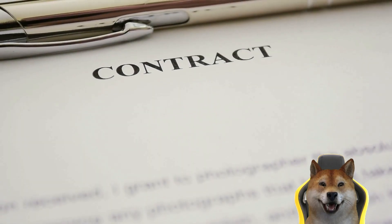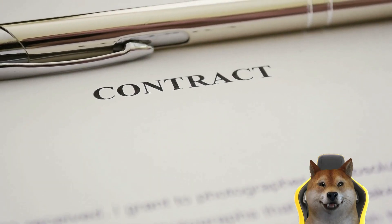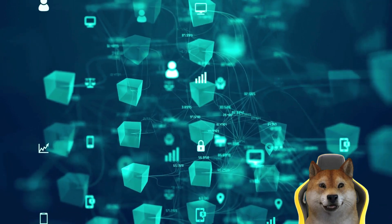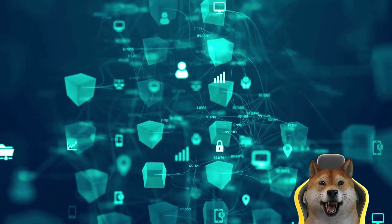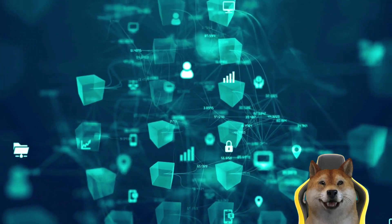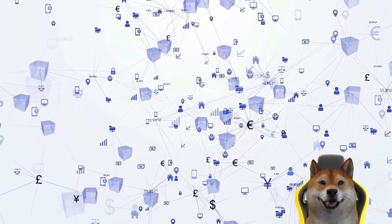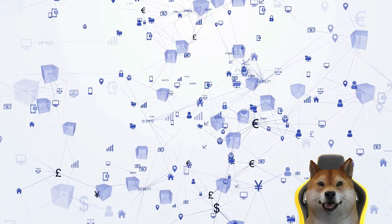Trustlessness. Blockchain and crypto eliminate the need to trust any third party, such as a bank or an individual intermediary. Web 3 users can transact without the need to put trust in any entity but the network itself.